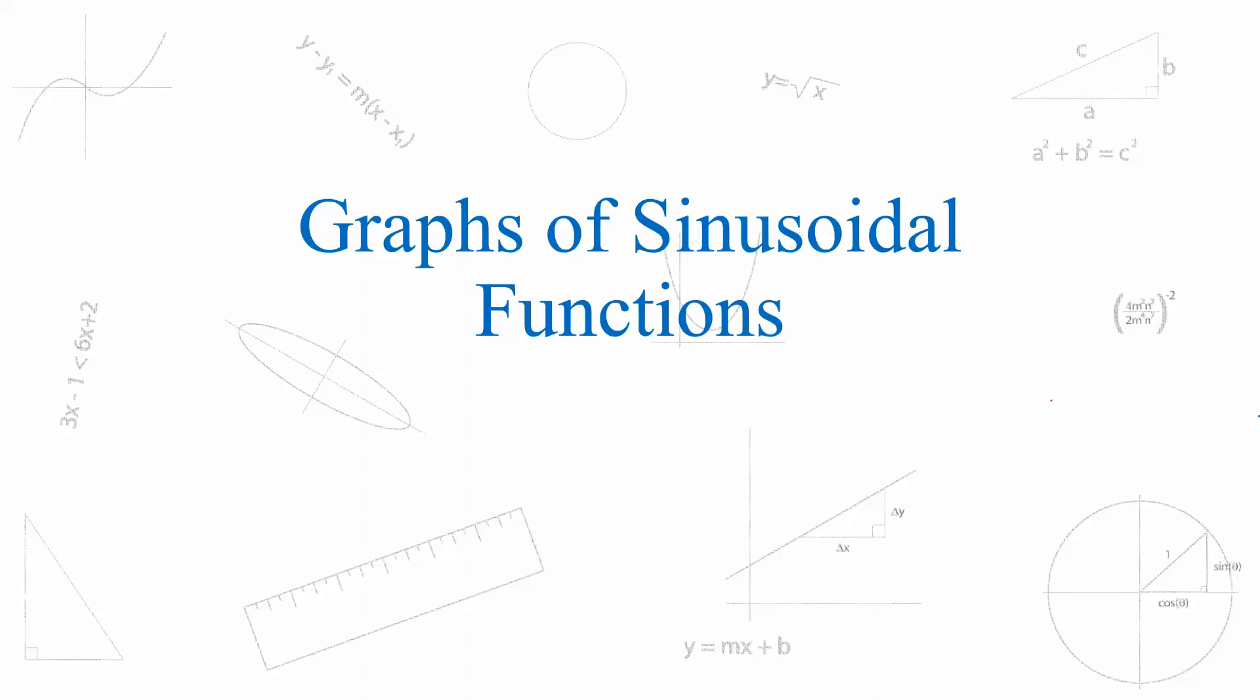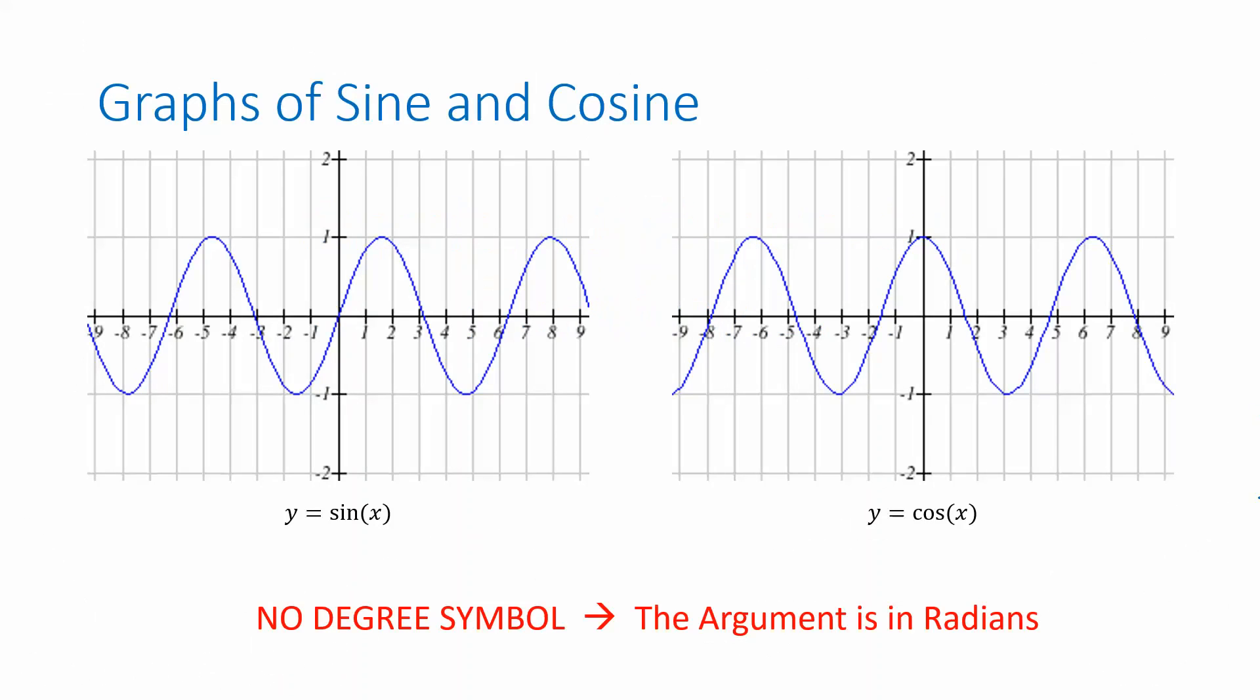Let's look at a few examples of questions that can be answered by understanding the graphs of sinusoidal functions. First of all, a sinusoidal function is any transformation of the graph of a sine function. For example, cosine is a sinusoidal function because you can get cosine by shifting the graph of sine.